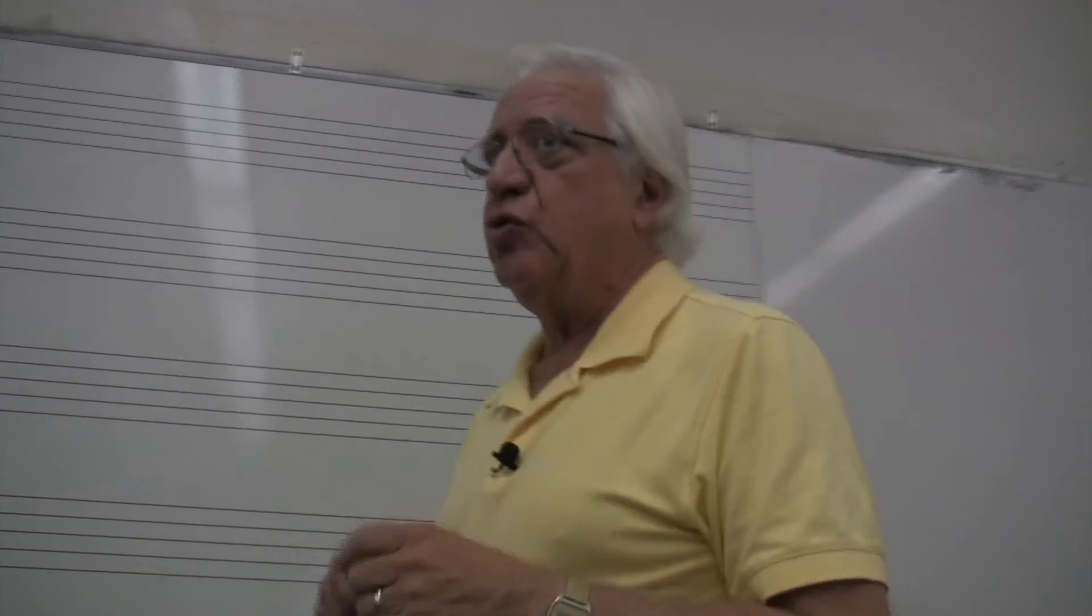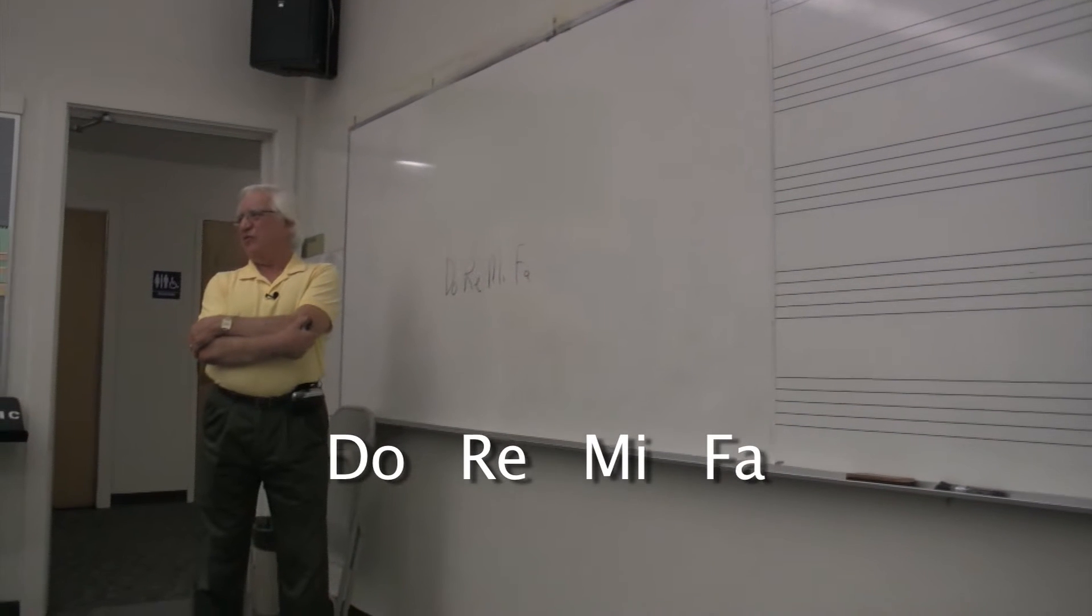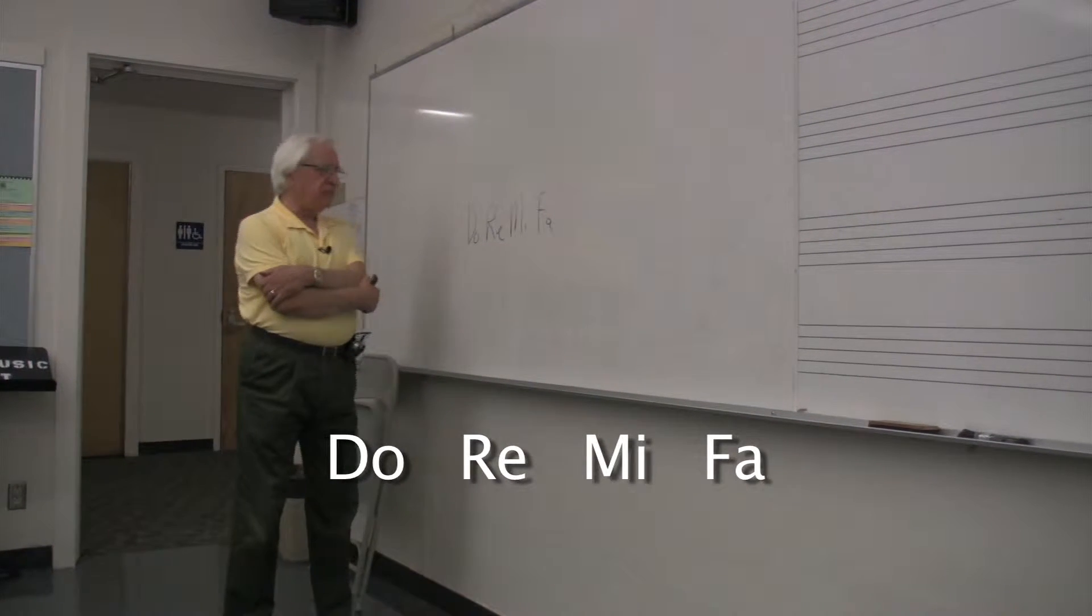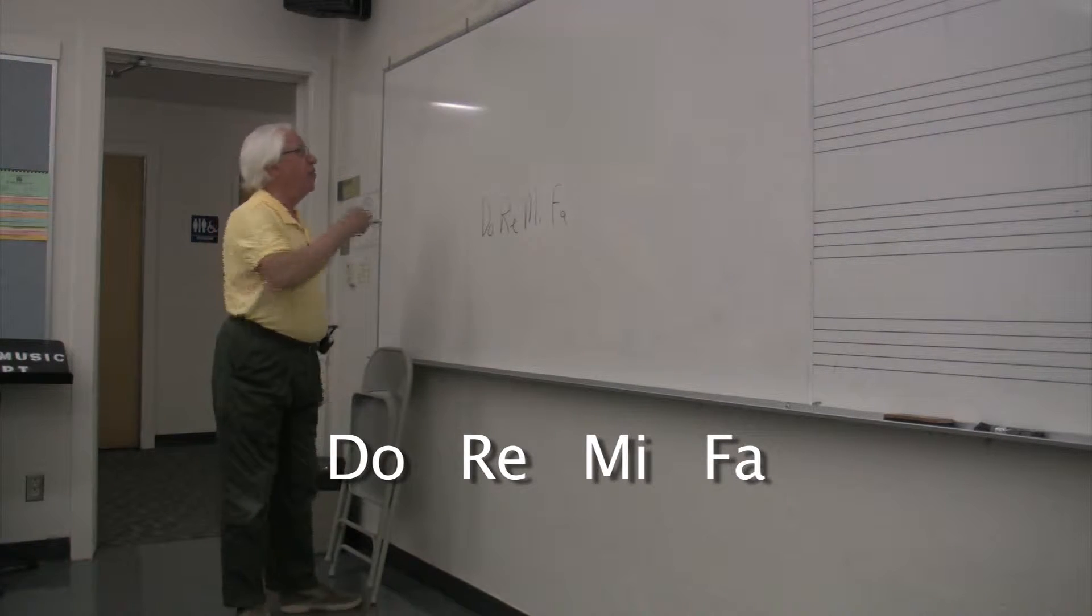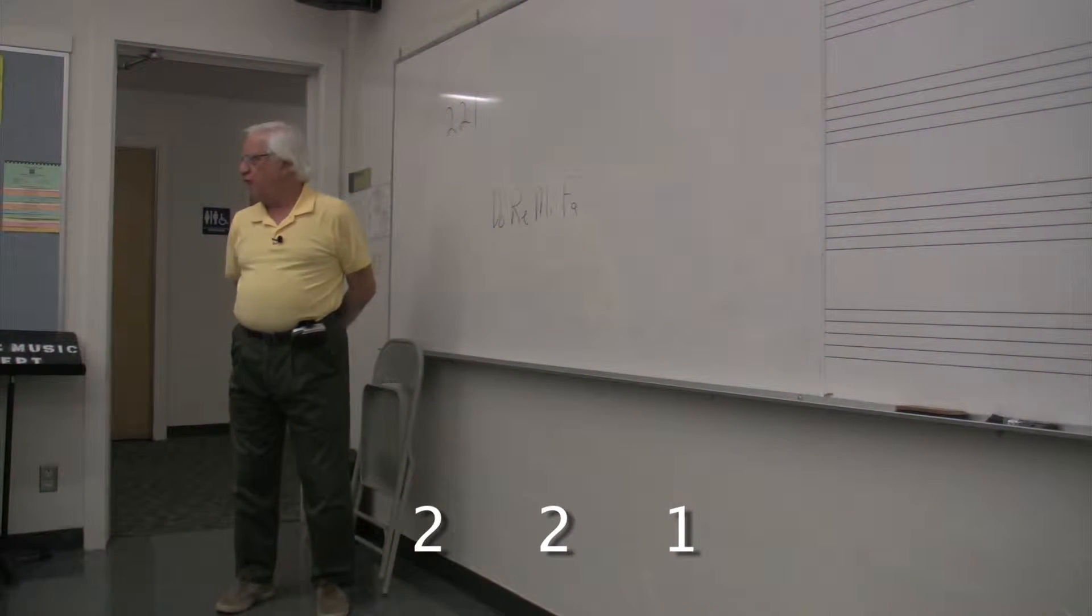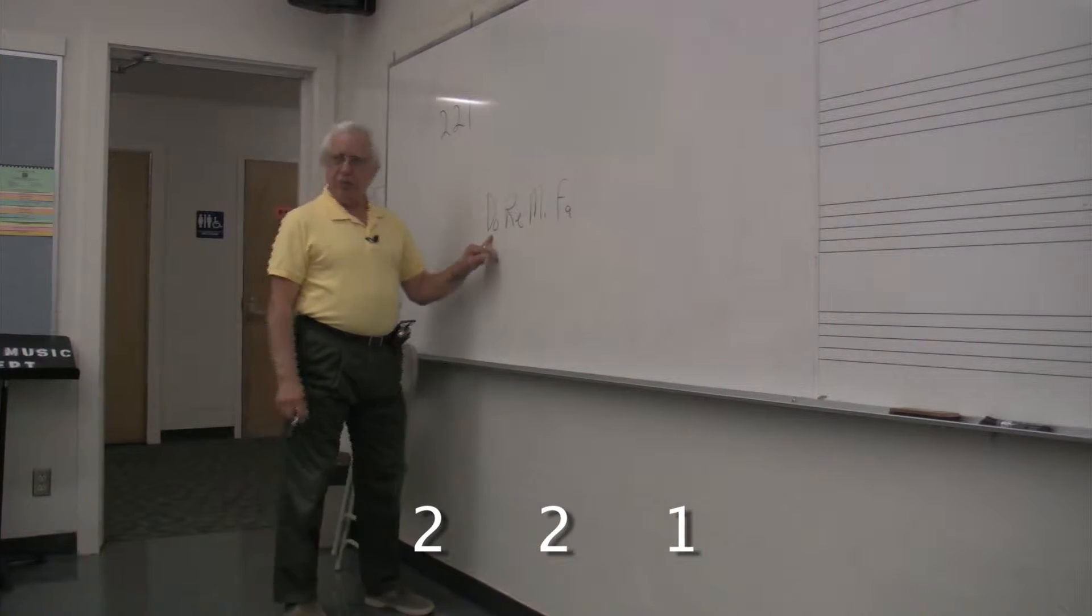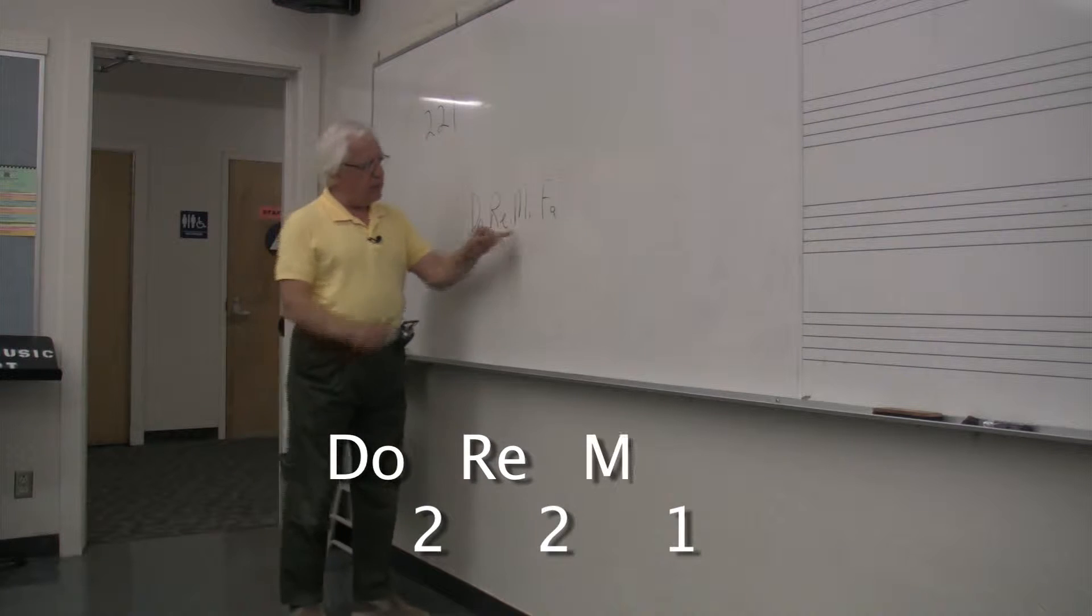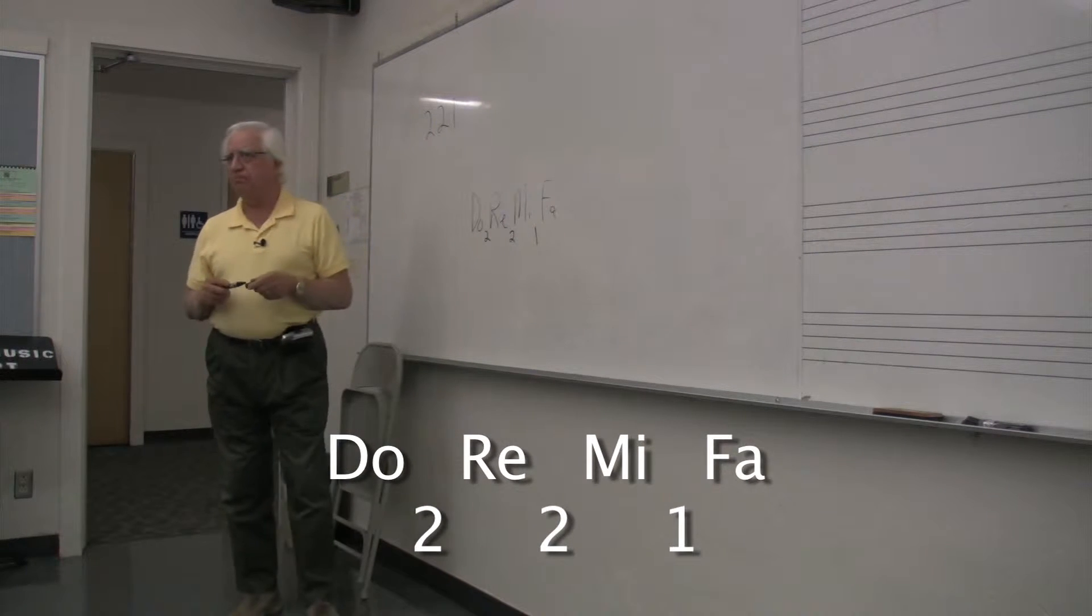And I'm going to give you the major scale in two sections. Anybody recognize that? That's the lower four syllables for every major scale that ever existed, correct? Do Re Mi Fa. Now, in order for you to know all of your major scales, the distance between Do and Re is two half steps. The distance between Re and Mi is two half steps. And the distance between Mi and Fa is one half step.